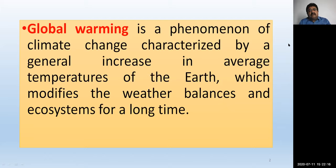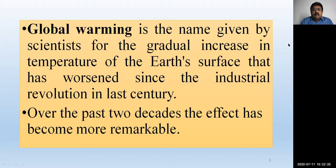This ecosystem is also affected and showing some effects due to global warming. Global warming can cause weather imbalance and global temperature increase. Global warming is the name given by scientists for a gradual increase in temperature of the Earth's surface that has worsened since the Industrial Revolution in the last century. Industrial Revolution started in Western countries, particularly in Europe — Great Britain, Germany and other countries.